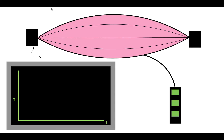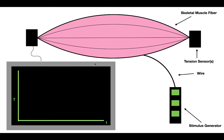Now that we know these terms, let's talk about what the three things are: muscle twitches, unfused tetanus, and fused tetanus. Starting with muscle twitches — in this experiment, you have a stimulus generator connected via a wire to a skeletal muscle fiber. This fiber is connected at two points to tension sensors, which measure the amount of tension generated. The readings are delivered to a monitor showing tension over time.